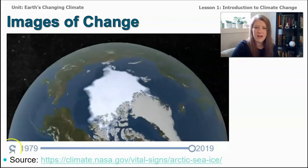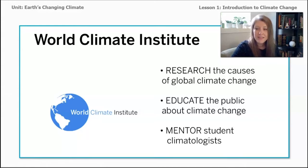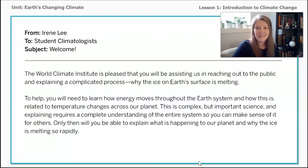So what does this tell us? Your job during this unit will be to take on the role of a student climatologist. You'll be working for an organization called the World Climate Institute, and you're going to learn about and then educate the public about what's happening in this Earth system — what's happening to the ice. The data that you'll analyze in this lesson is real data collected by real scientists who work for, for instance, the National Oceanic and Atmospheric Administration or NOAA. Even though the World Climate Institute is a fictional organization, it's based off of real ones so that you can take on the role of what a scientist really does during this unit. Let's get our first email from the World Climate Institute — this comes from Irene Lee, and the subject is: welcome.